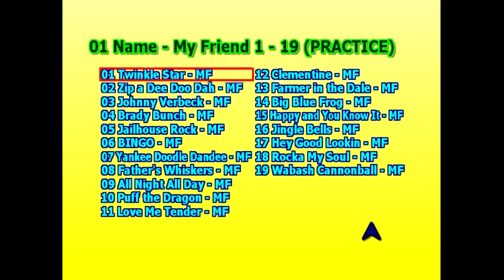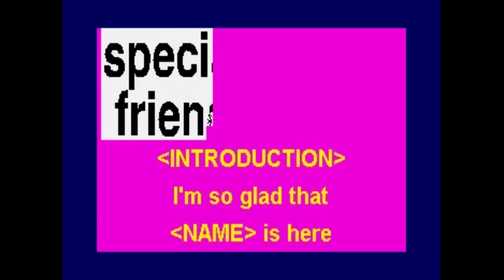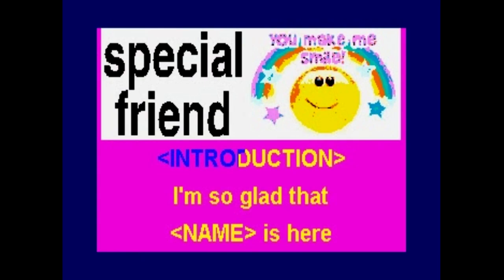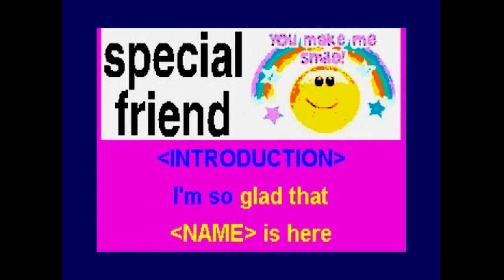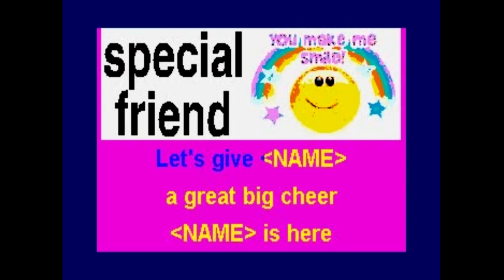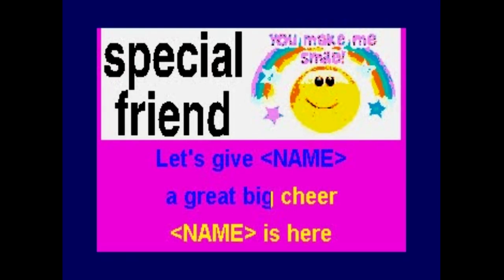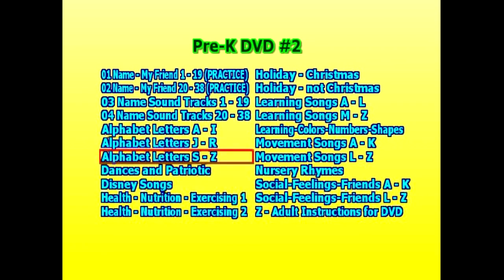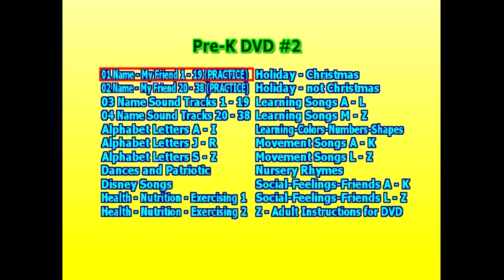If you're not a singer, you can always talk. In this way, you get to honor special children by their first name and make them feel special by singing their name in a song. For instance, we'll start with the first one — Twinkle Little Star. This is just the practice songs. I use 'My Friend' instead of the child's name in these practice songs for you. 'I'm so glad that my friend is here. Let's give my friend a great big cheer.' Go back to the main menu.